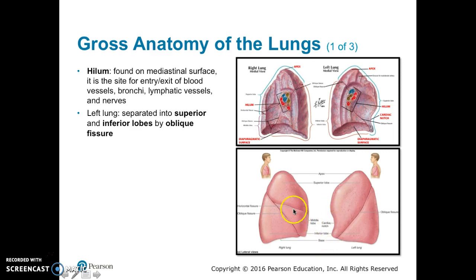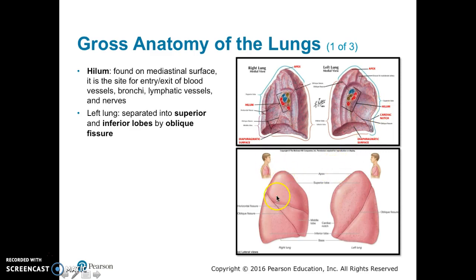The right lung is separated into superior, middle, and inferior lobes. In the right lung, the superior and middle lobes are separated by a horizontal fissure, and the middle and inferior lobes are separated by an oblique fissure. Here is the horizontal fissure and the oblique fissure.